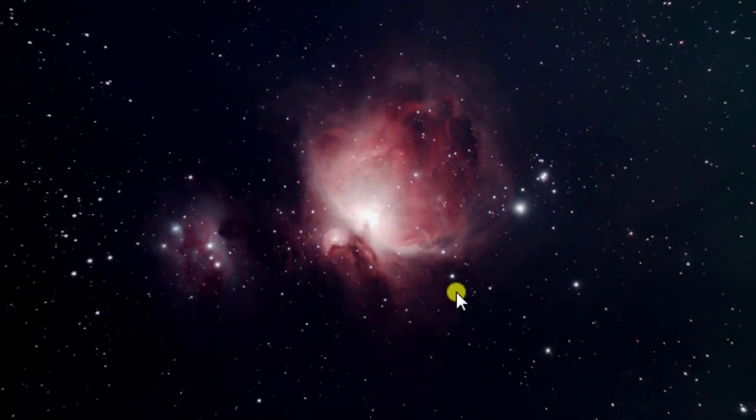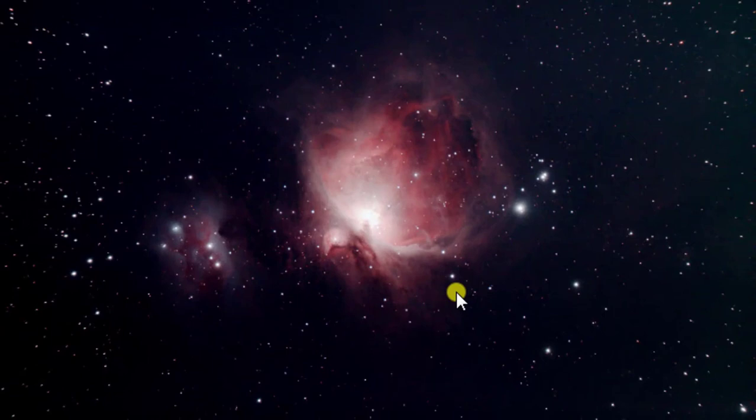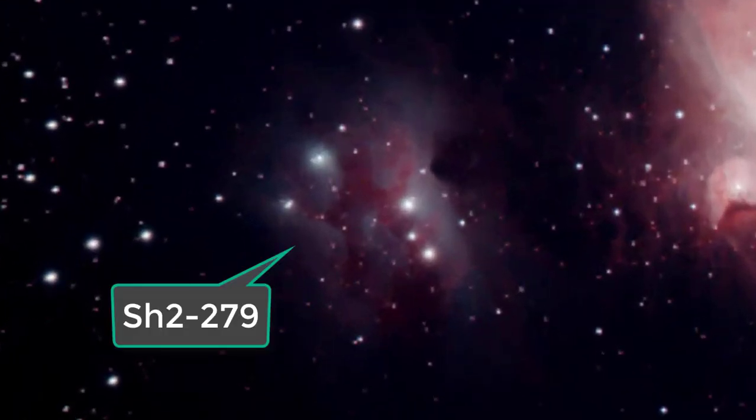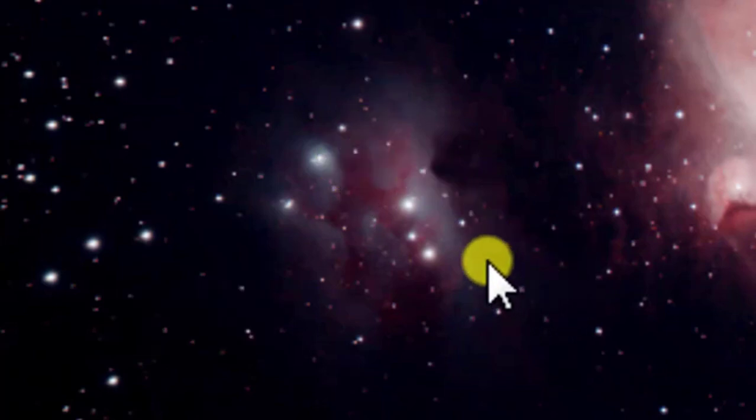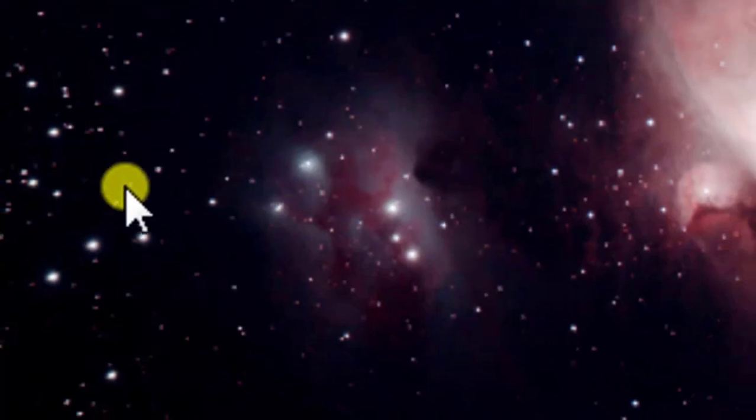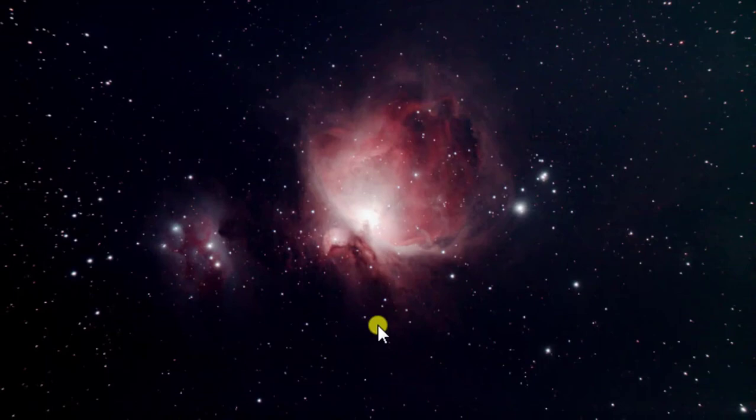I found a good guide star, made sure it was focused, I clicked on it, and I hit Start Guiding, and that's all I did. And it did a really good job. Most of the stars in this field are nice and round, and so the Starshoot Autoguider is just really simple to use.